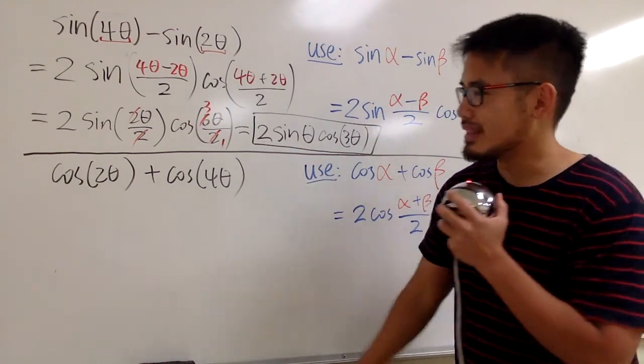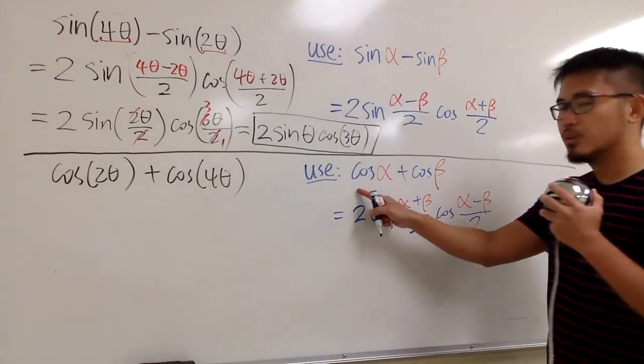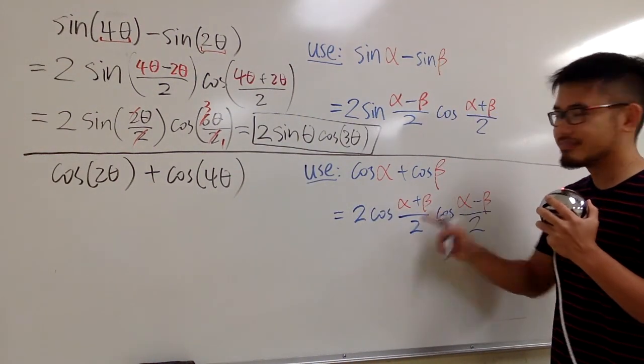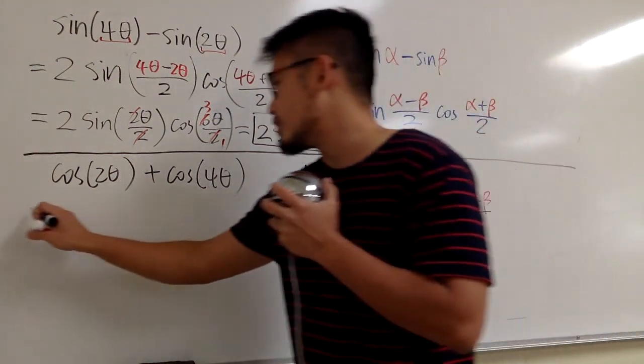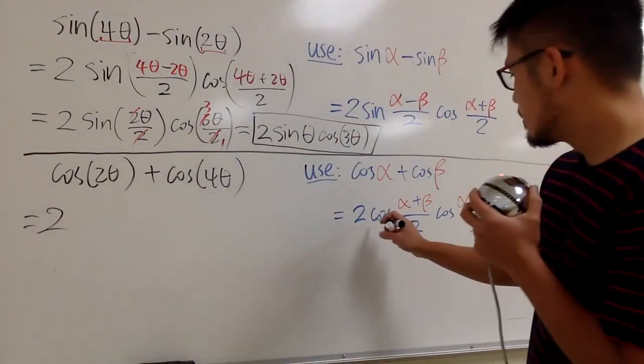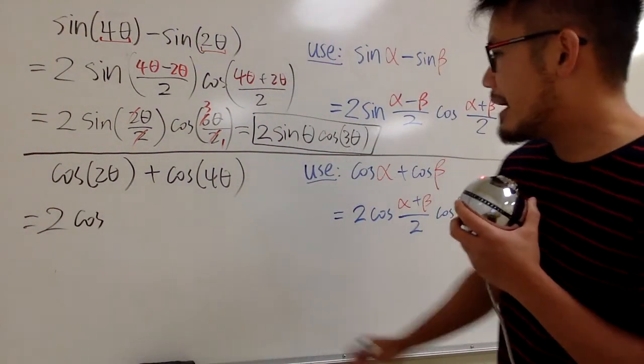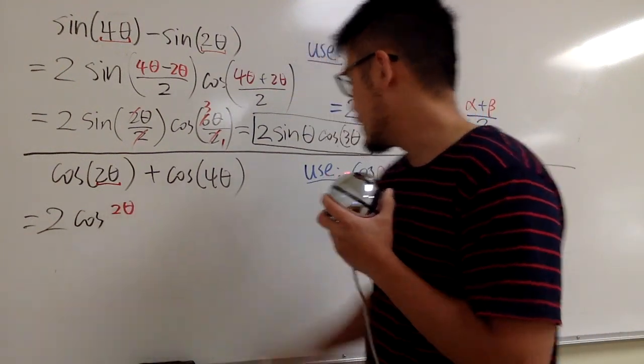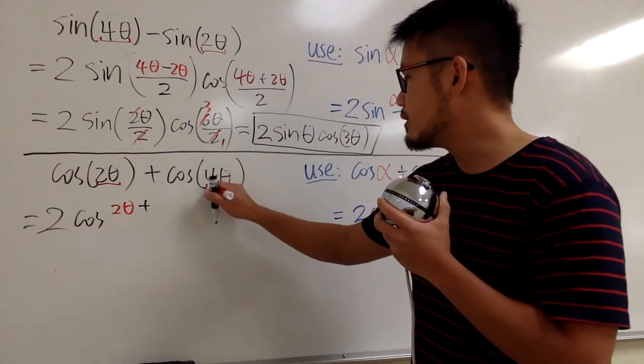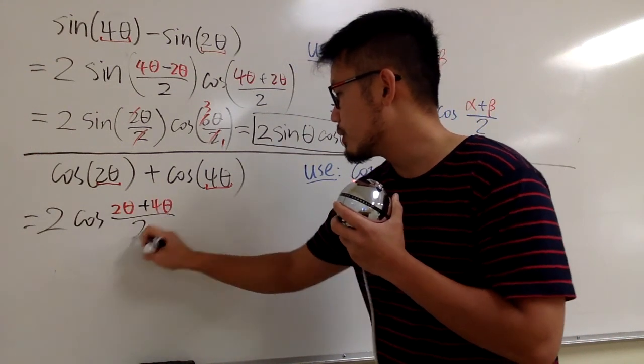And let's work on another one. Cosine of 2 theta plus cosine of 4 theta, and we are going to use this formula here. Cosine plus cosine, and then the angles are different. Let's just put this in action. We are going to get 2, and we have cosine. And then alpha in this case is 2 theta. So let's just put that down, 2 theta. And then we add it with the second angle, which is the beta, which is 4 theta.